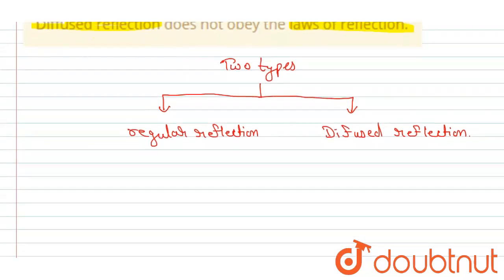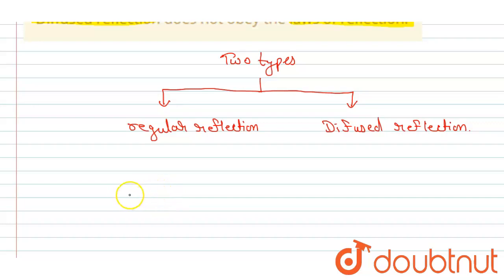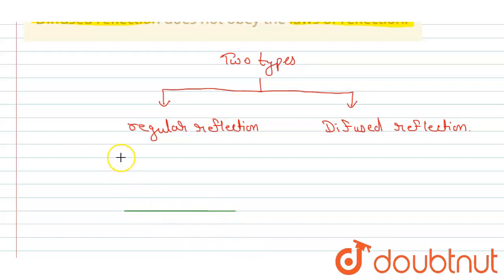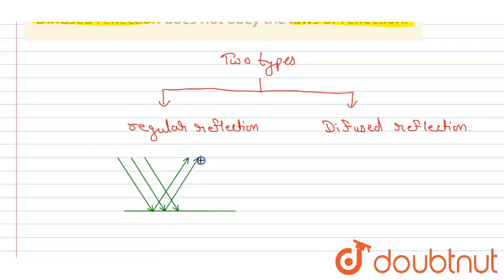In regular reflection, all the incident rays are parallel to each other, and the reflected rays are also parallel to each other. For example, here is a plane mirror or surface, and the rays coming in are parallel, then they also reflect back parallelly. The reflected angles are also parallel to each other. These are called regular reflection.